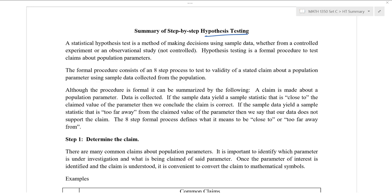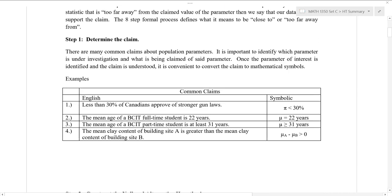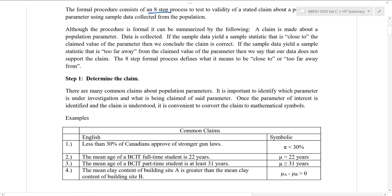In hypothesis testing, the whole idea is it's a method to try to make decisions using the sample data that you have, usually decisions about the entire population. This is a formal procedure, and so this is why we're going to be following these eight regimented steps. We're going to skip a lot of this sheet today and we'll just get to see each of the steps in one example. The first step, step one, is to determine the claim.